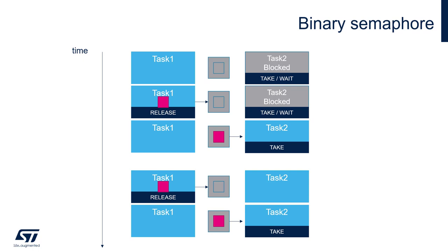Task 1 is releasing the semaphore while task 2 is waiting for it, being in a blocked state. As soon as task 1 releases the semaphore, task 2 is taking it, so the scheduler moves it from blocked to ready or run state. Then task 2 continues its operations until the next call for the semaphore.